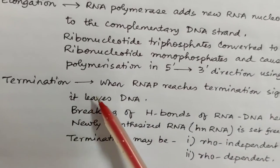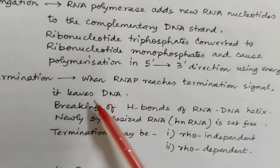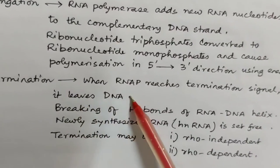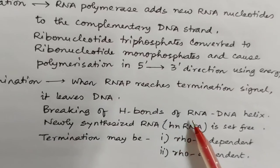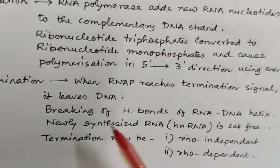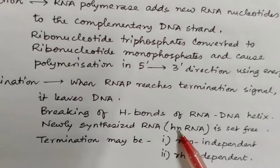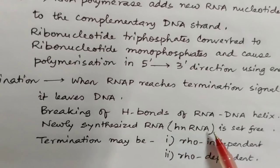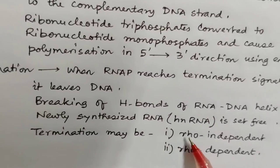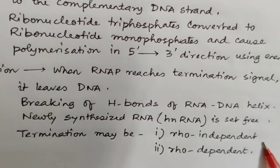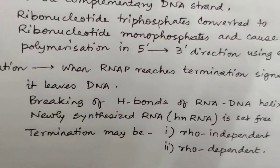Then termination: when RNA polymerase reaches the termination signal it leaves the DNA, breaking off the hydrogen bonds of the RNA-DNA helix. The newly synthesized RNA, or HnRNA (heterogeneous nuclear RNA), is set free. The termination may be of two types: either rho-independent or rho-dependent. So here we end up.